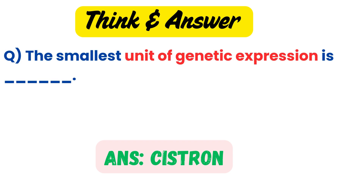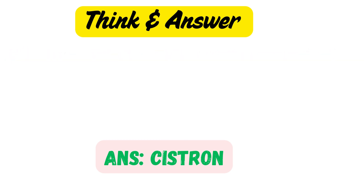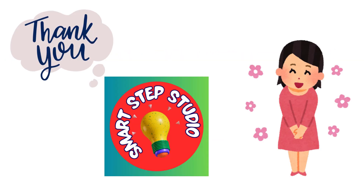Think and answer: The smallest unit of genetic expression is — Cistron.